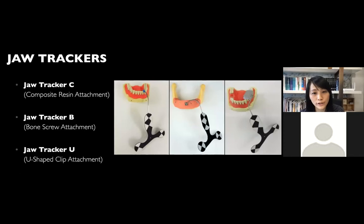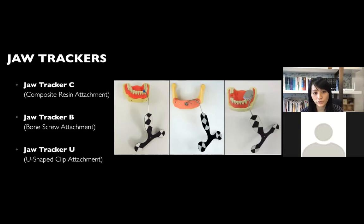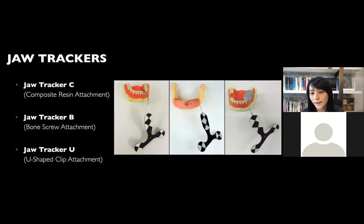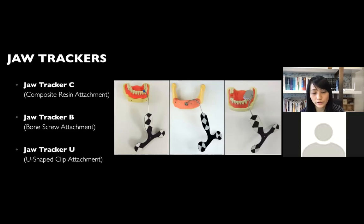The new jaw trackers — there are three different kinds. The first is Jaw Tracker C, used on the left-hand side: you use composite to attach it on your teeth or anything non-movable in your mouth. The second is Jaw Tracker B, secured directly by a bone screw screwed into your bone — also non-movable. The third is Jaw Tracker U, which has a U-shaped clip attachment. You use bite registration material to make it stronger and non-movable — it's more of a snap-on type of attachment. These are the three new types of jaw trackers you can use during surgery.